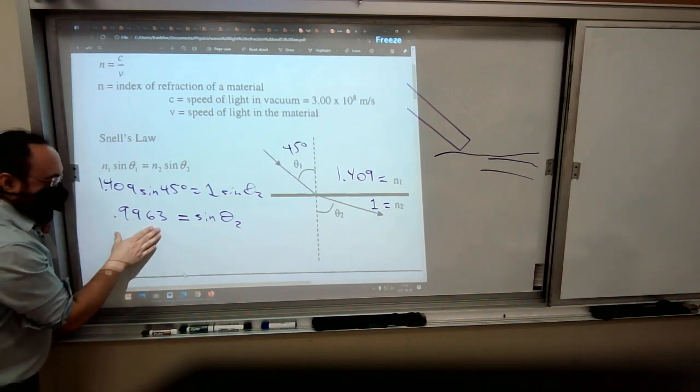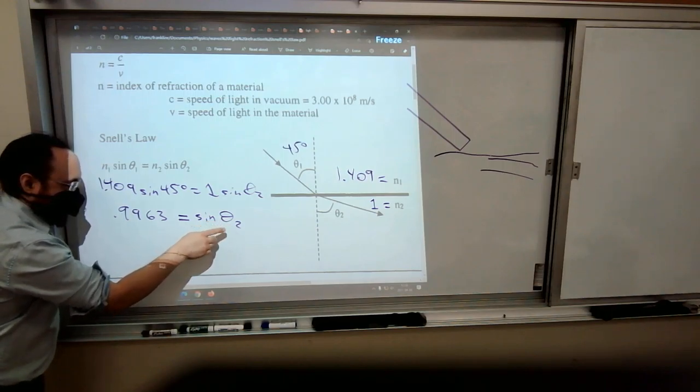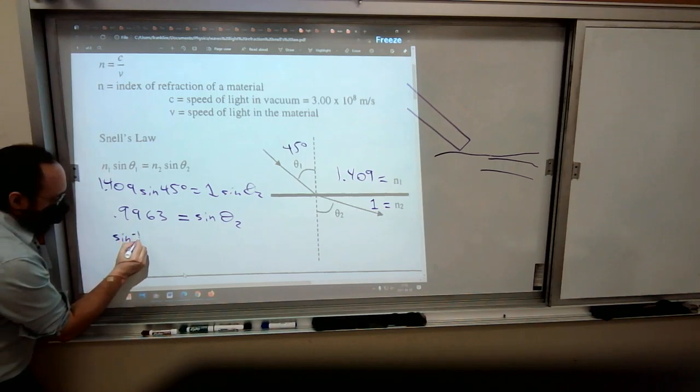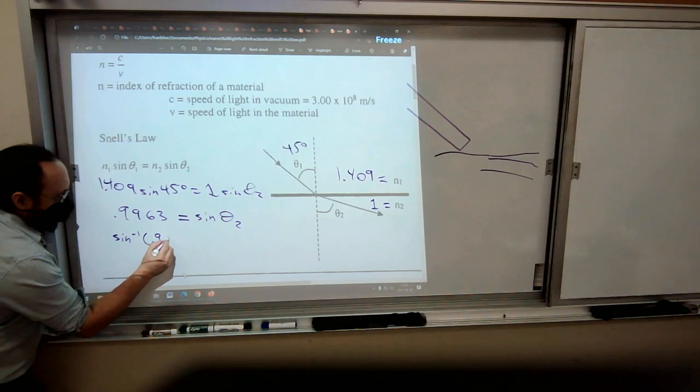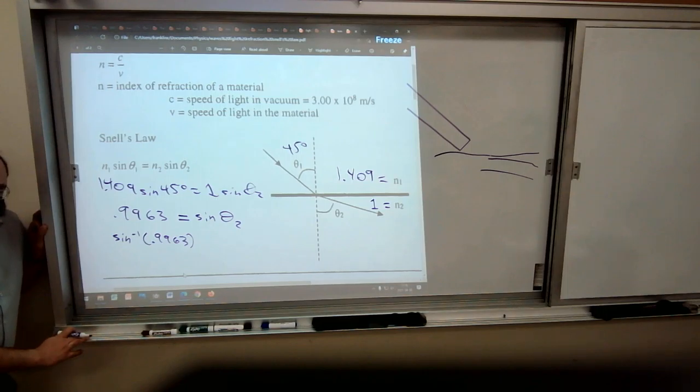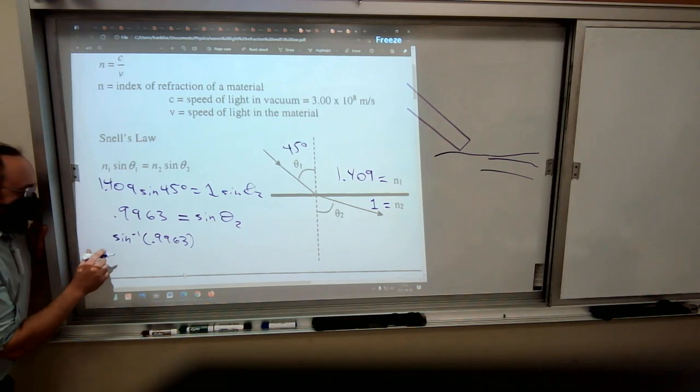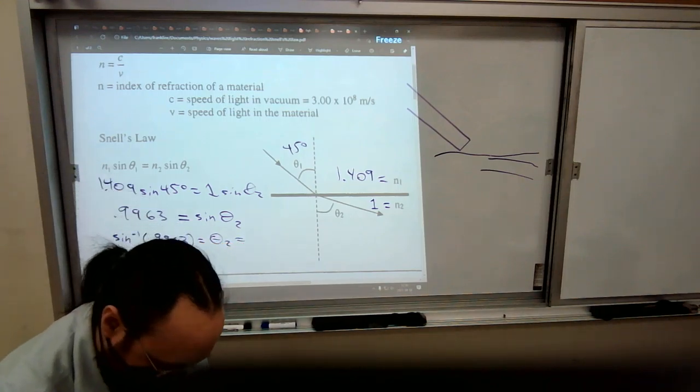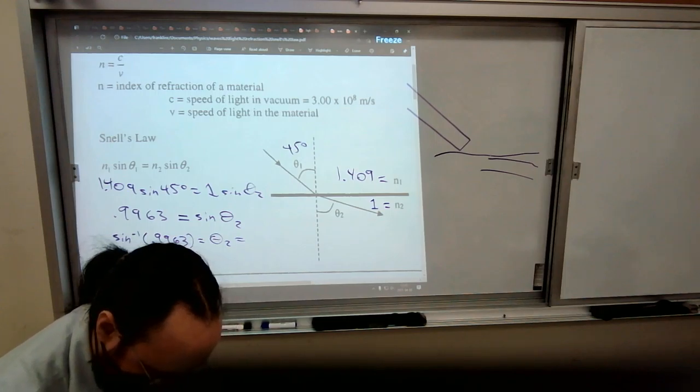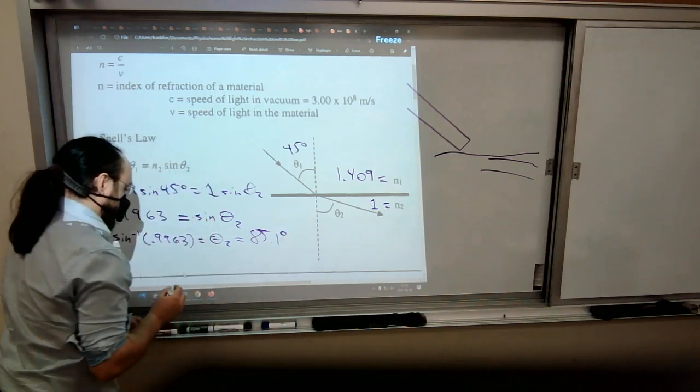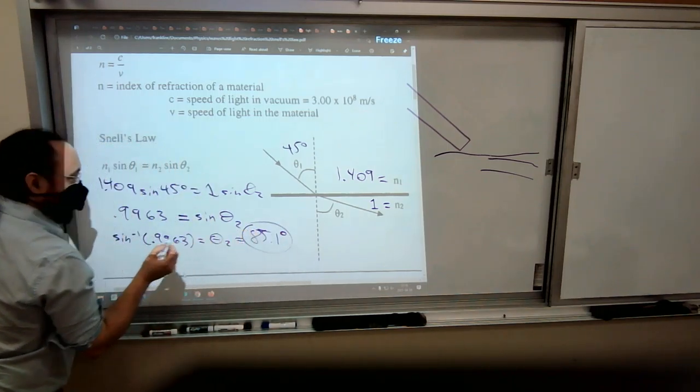And here's where we use our fancy trigonometric function, because usually we do the sine of the angle equals the answer. Now we're doing the answer and trying to find out what the angle would be if you did take the sine of it to get this. So the way to do that is to use your inverse sine function. I don't quite remember what other names for it might be, so try—I think it's arcsin or arc sine is the same as inverse sine. If that doesn't work, then try something else, because if you do this to get theta 2, you should get 85.1 degrees. And that would be my other angle.